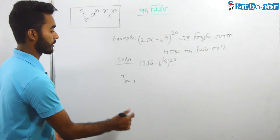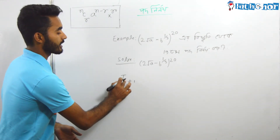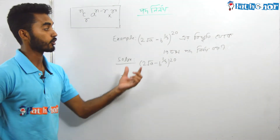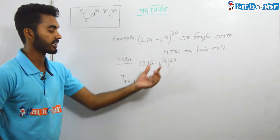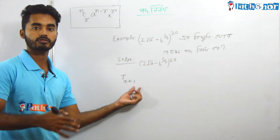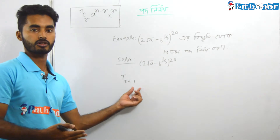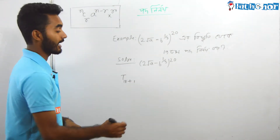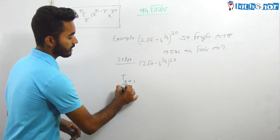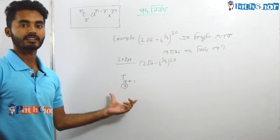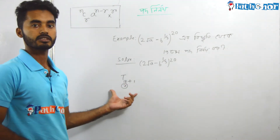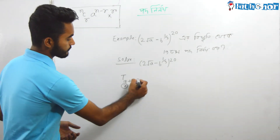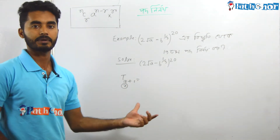If we look at r, it is 18 times. The r is 18 times, and we have to show that 8 plus 1 is 19 times. So T r plus 1 means T 18 plus 1, which is T 19. Since r means r equals 18.